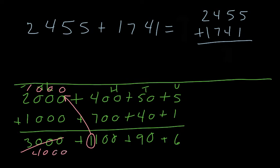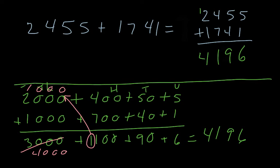So we should have four thousand, plus one hundred, plus ninety, plus six, which equals four thousand one hundred and ninety-six. Let's double-check: six, ninety, one hundred — yes, four thousand one hundred and ninety-six. That checks out, and that is how you do column addition with partitioning. Good luck!